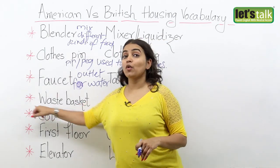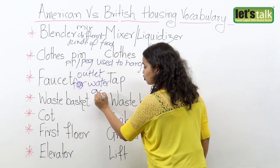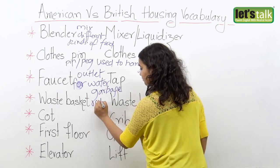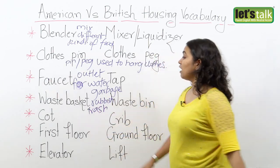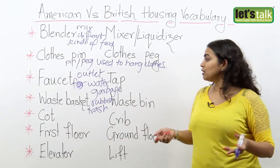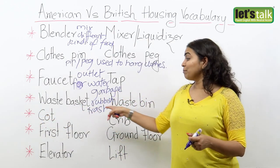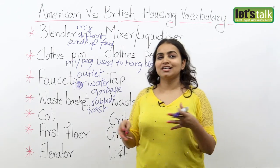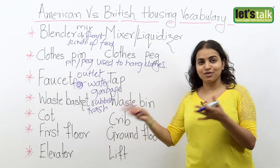Our next word is waste basket, which is the place where you put the garbage, or the rubbish, or the trash. But in the UK it is called the waste bin. So in the US you say 'put the garbage in the waste basket,' but in the UK you would say 'put the rubbish in the waste bin.' Garbage is the word used in the US, compared to rubbish which is used in the UK.